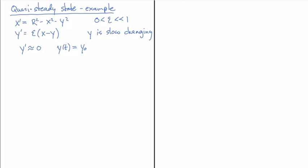Once we have this fixed y value, we can now write down the x equation. That's going to be just a single variable equation where y is a constant, and so we can draw a phase line for this.